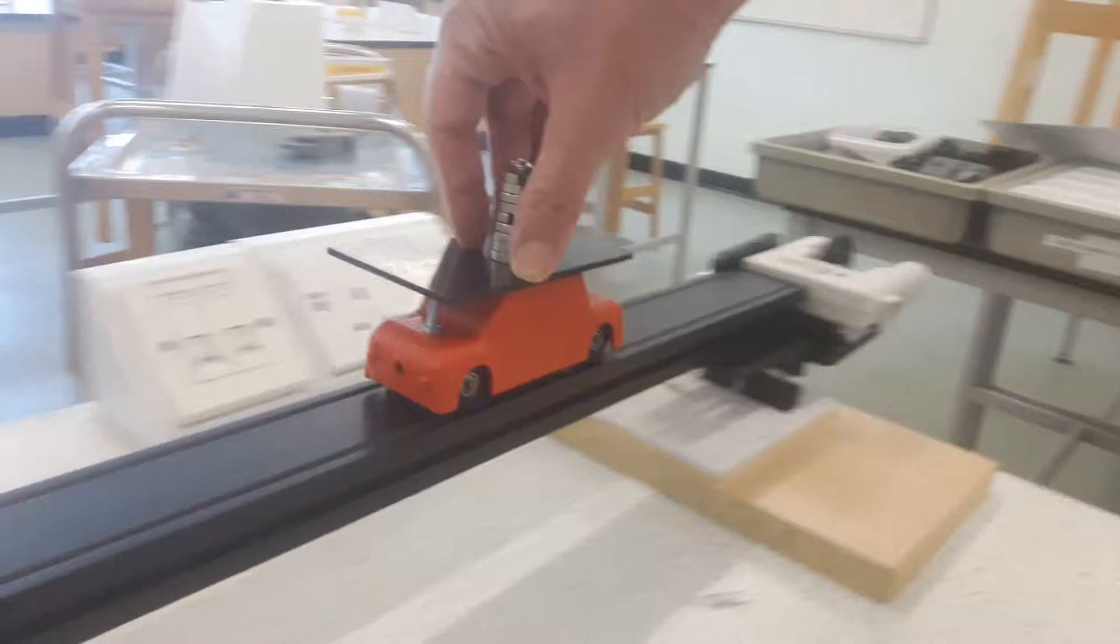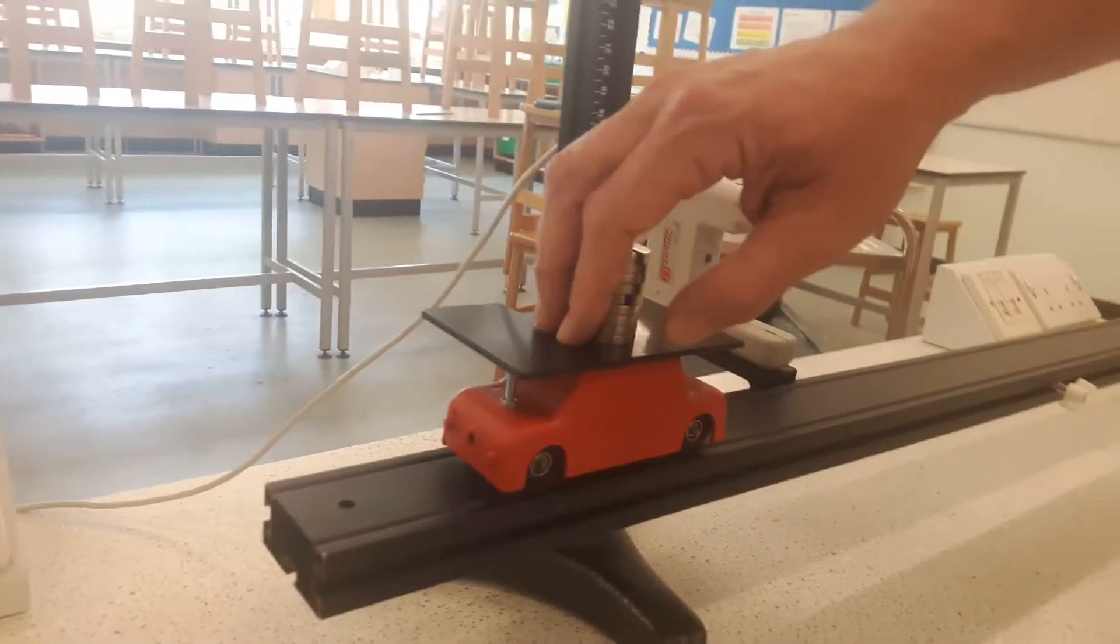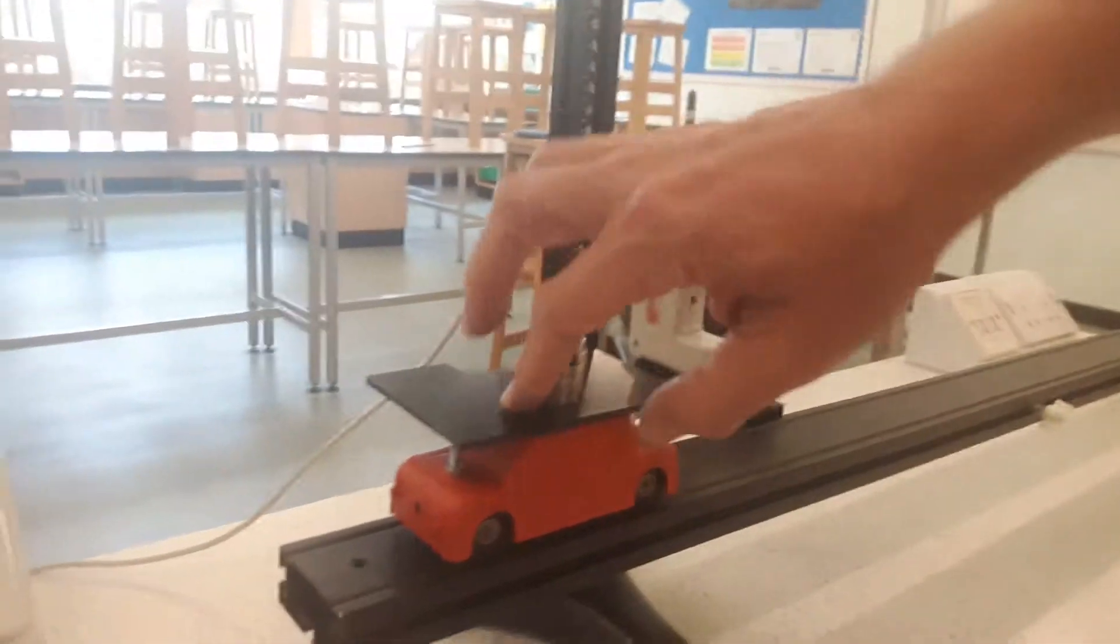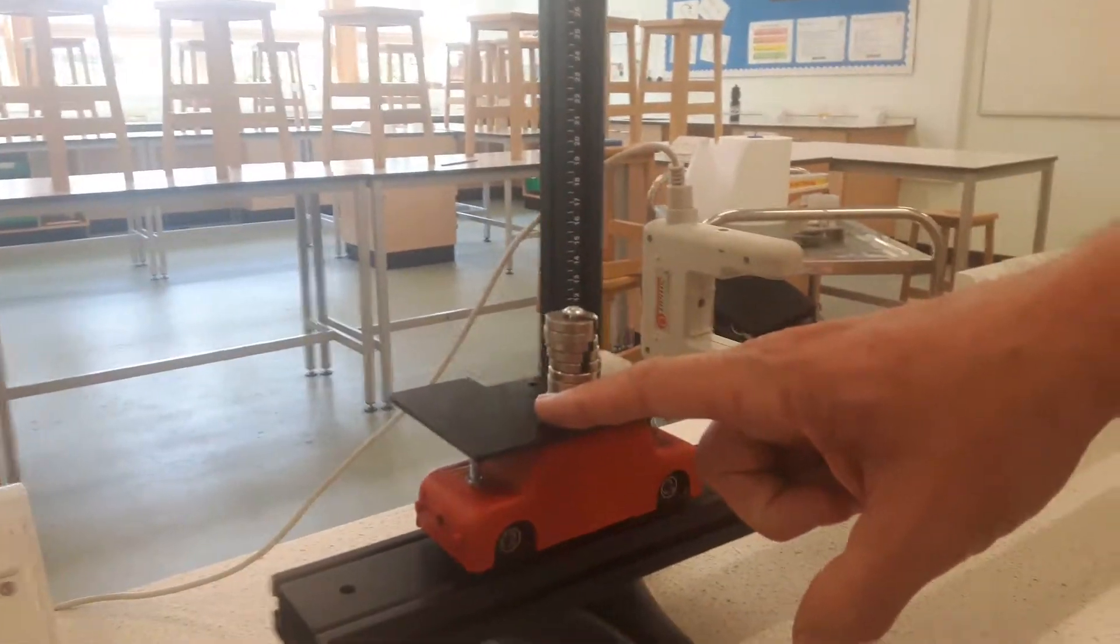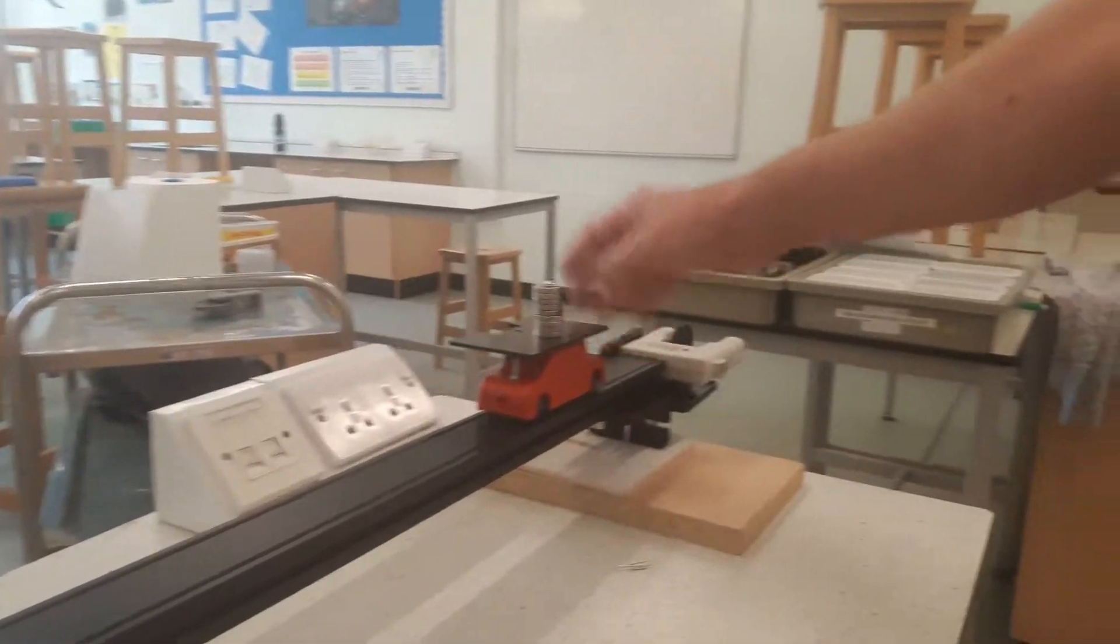So what we do is we set up the track with a slight downward slope, and the way that you check that is if you roll your trolley, what it should do is roughly travel at a steady speed.